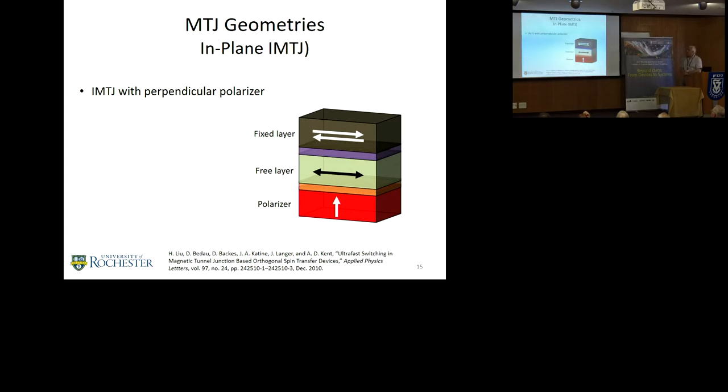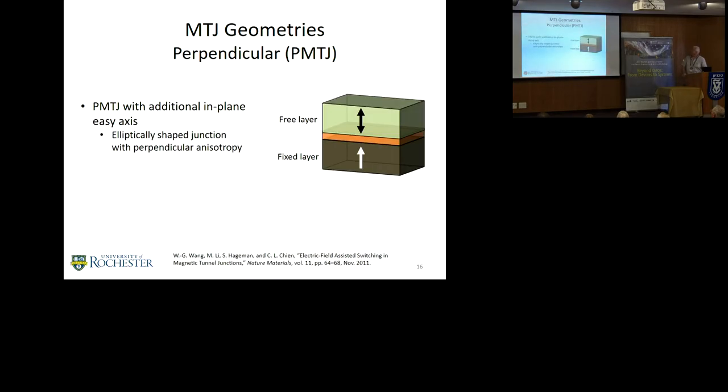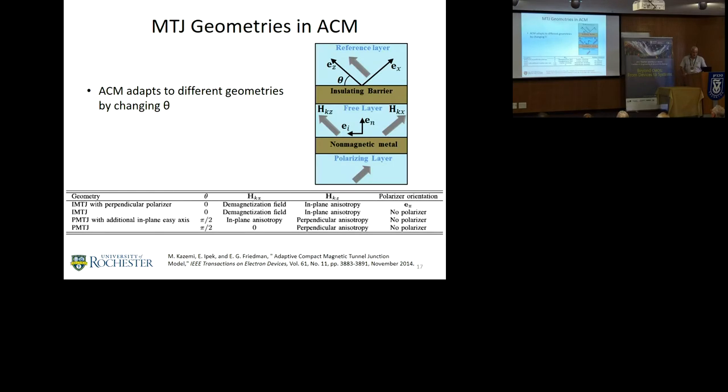Here's an in-plane MTJ with a perpendicular polarizer. There's a free layer which changes polarization and the fixed layer. For the PMTJ, now it's perpendicular and the fixed layer and it flows vertically. These use elliptical shaped structures or oval shaped structures. This model basically adapts to these different conditions, geometries, by playing with the theta characteristics, the angle of the various magnetic fields, and whether it has a demagnetization field, the in-plane anisotropy, entropy, and the orientation of the polarizers.